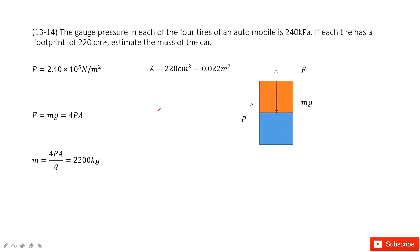In this one, we can see we have a car. This car has four tires and the pressure for each tire is given, this one. And the cross-sectional area for each tire is also given as there when it touches the ground.